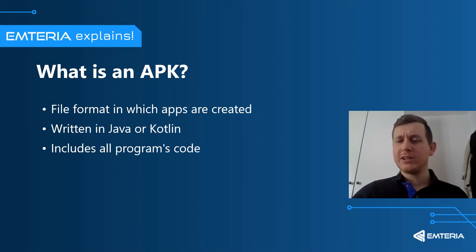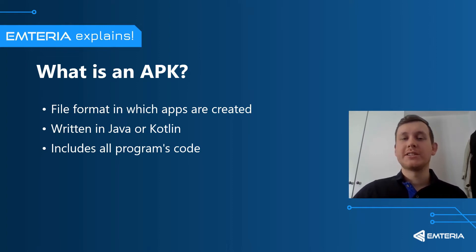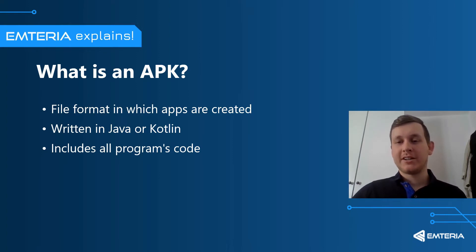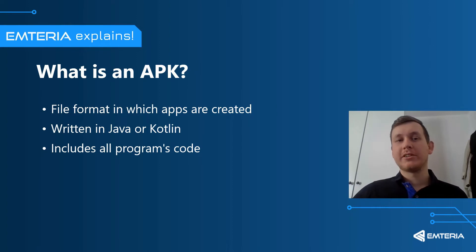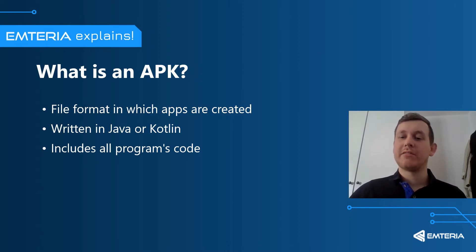But what is an APK file? An APK is the file format in which apps are created for the Android operating system. It is used to install applications on Android-based devices and is written in Java or Kotlin. A program for Android is first compiled using Android Studio or Visual Studio and then all the parts are packed into an APK container file.